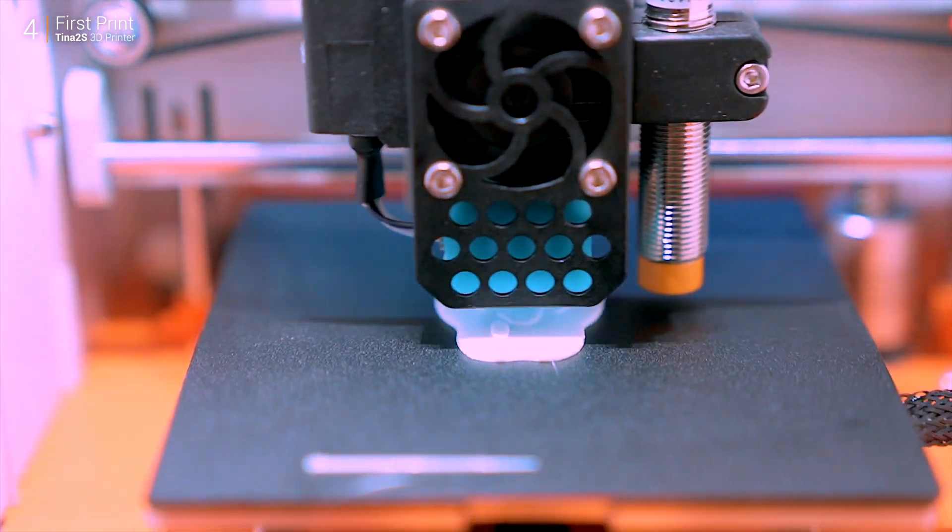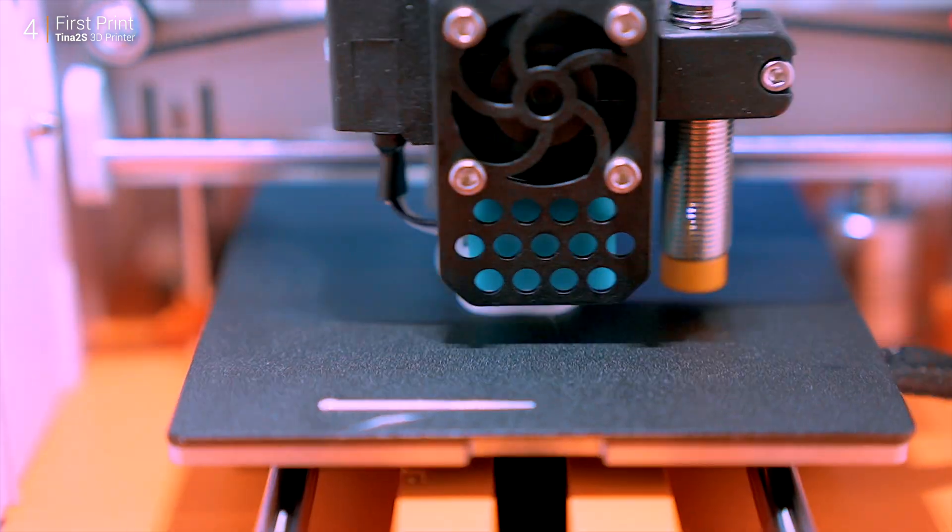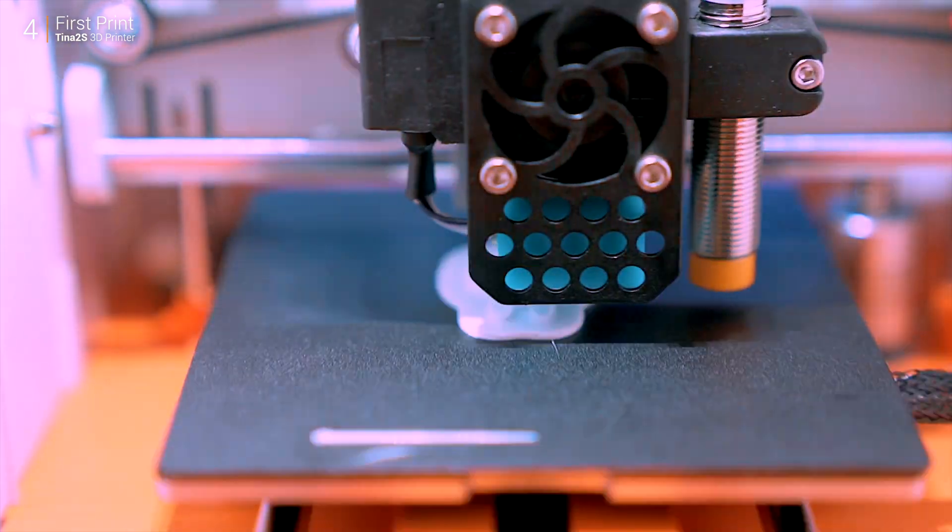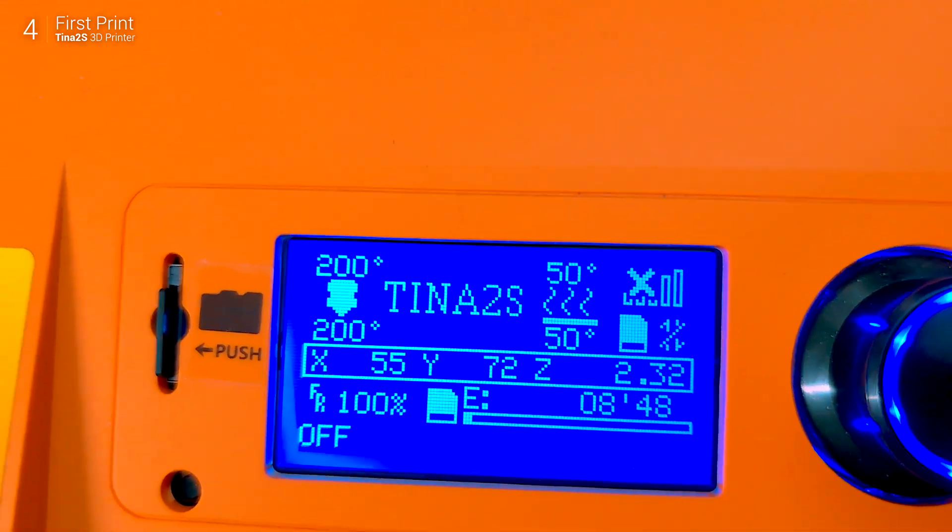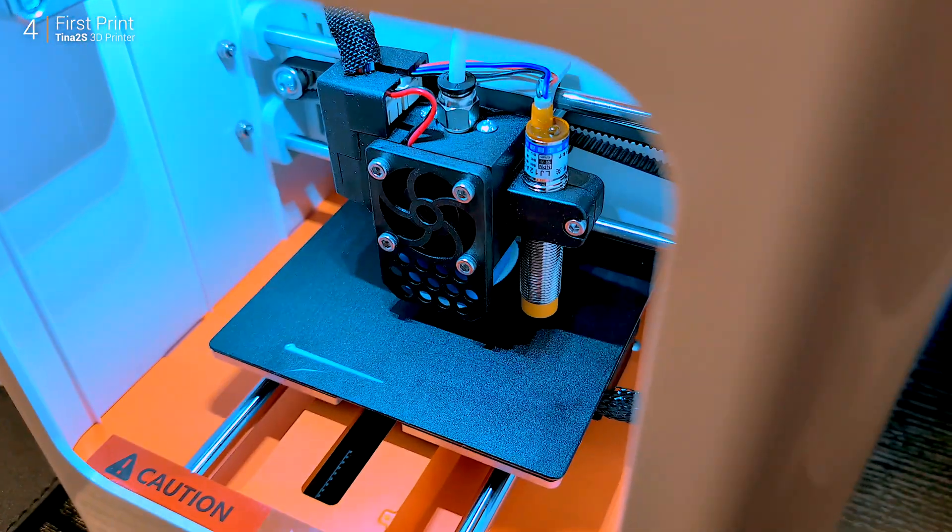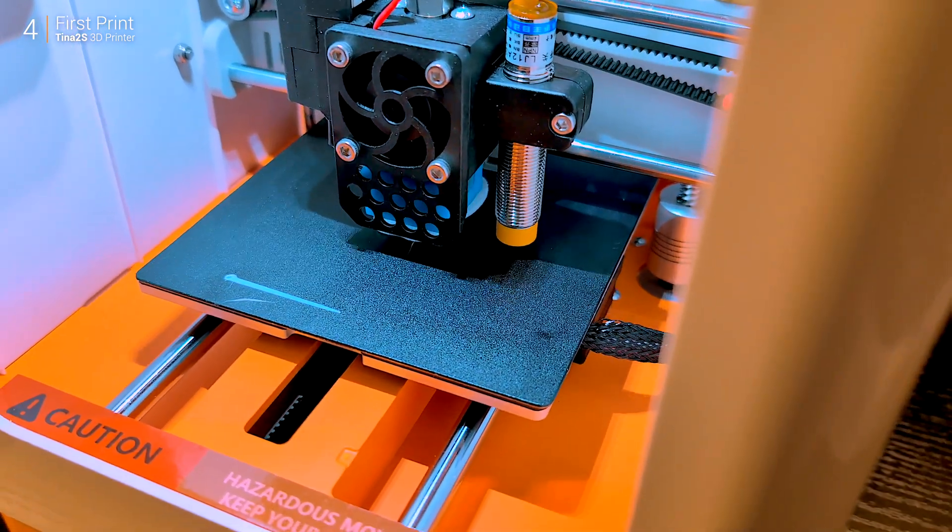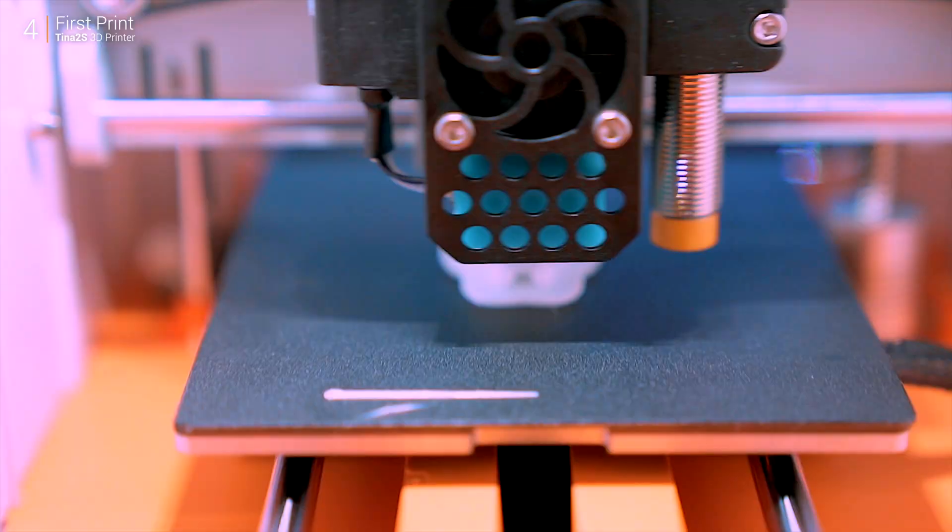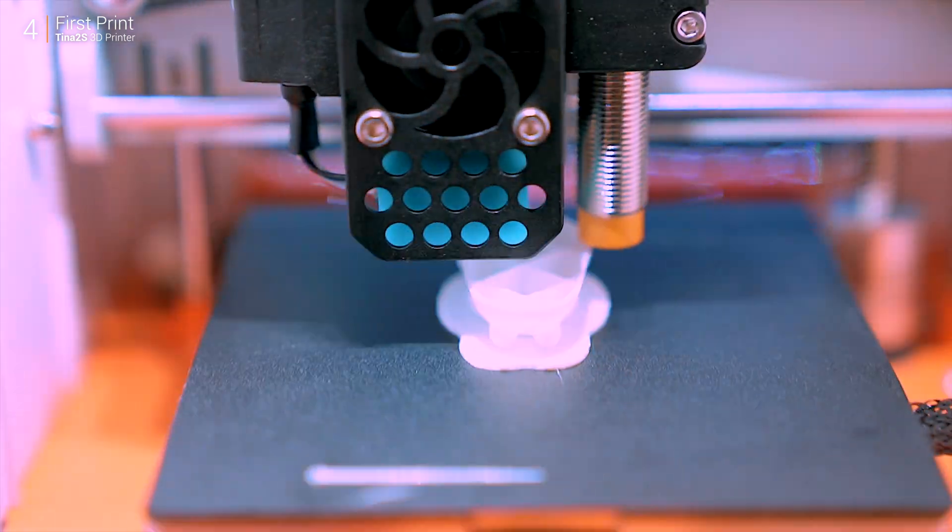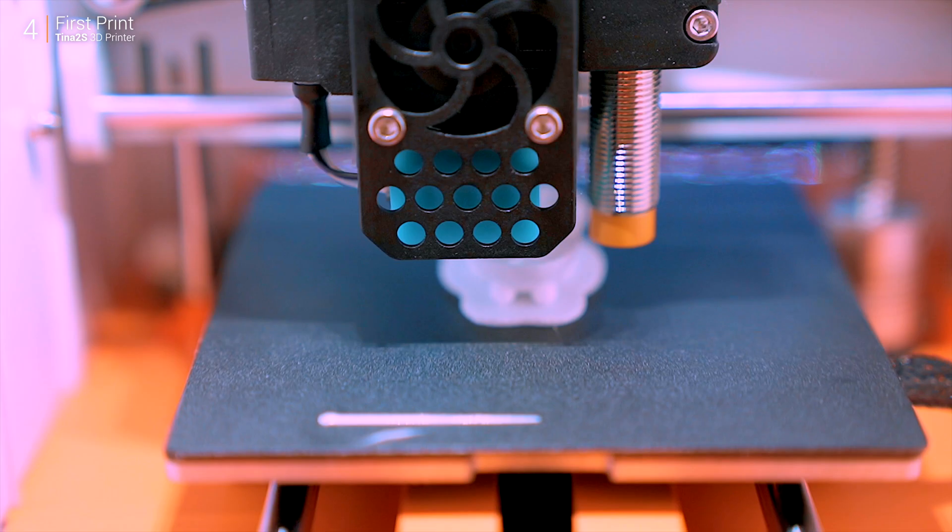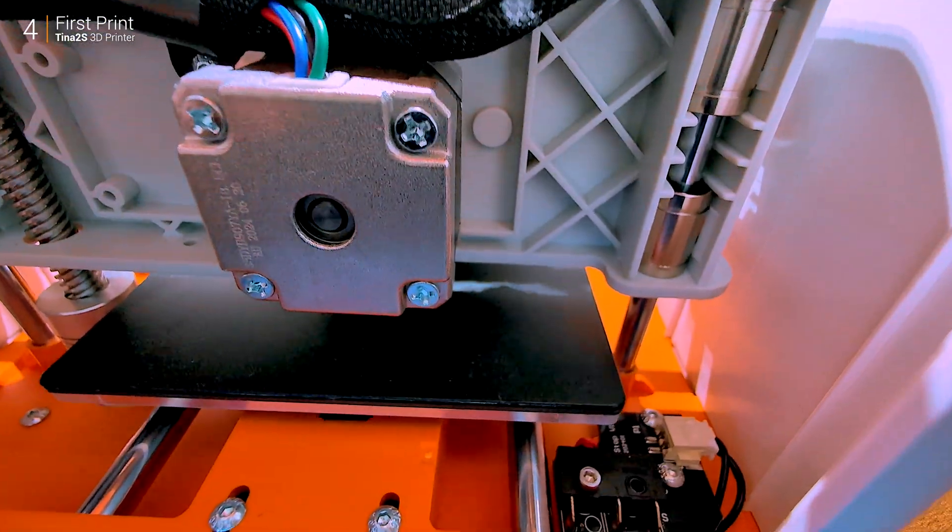The starter filament is white PLA, perfect for beginners. It doesn't need extreme temperatures, and there's enough for a few prints. While Wifun recommends using their filaments, any standard PLA should work fine. Just avoid experimenting with tricky materials like PETG—this is not the printer for these materials. Stick to the basics and you're good. And there you have it: setup done, rabbit printing, and your 3D printing journey officially underway.